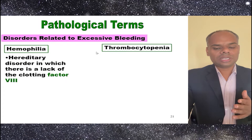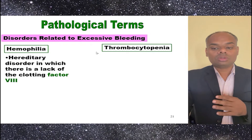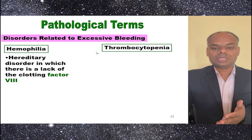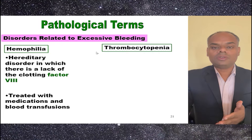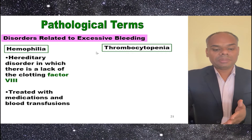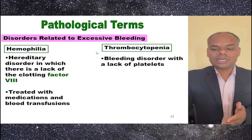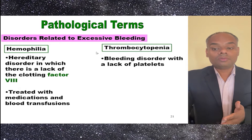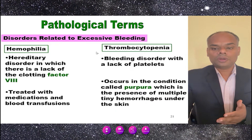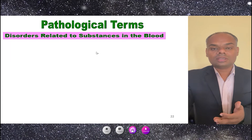Disorders related to excessive bleeding include hemophilia and thrombocytopenia. Hemophilia is a hereditary disorder in which there is a lack of clotting factor 8, and it can be treated with various medicines and blood transfusion. Thrombocytopenia is a bleeding disorder with a lack of platelets, and it occurs in a condition called purpura, which is the presence of multiple tiny hemorrhages under the skin.